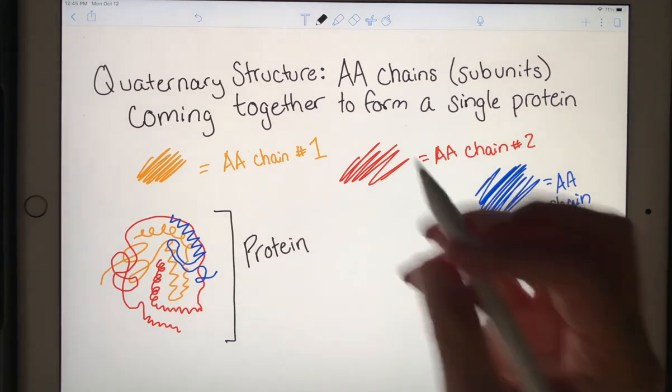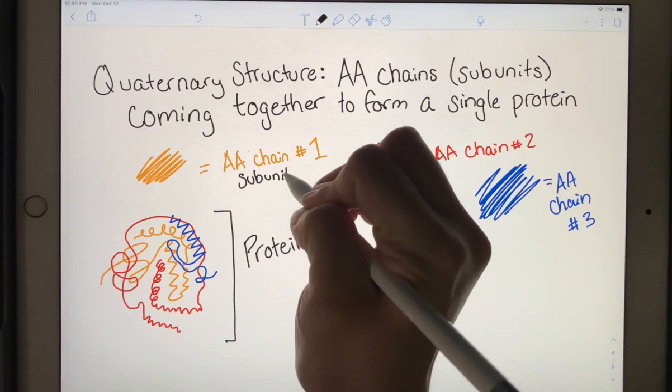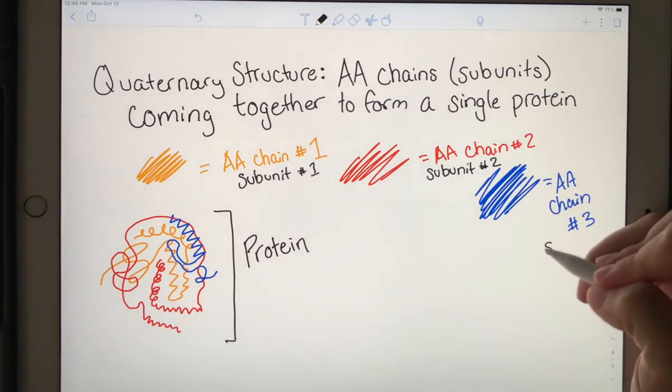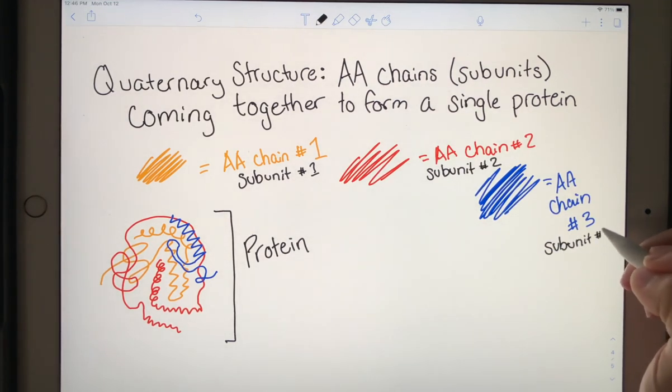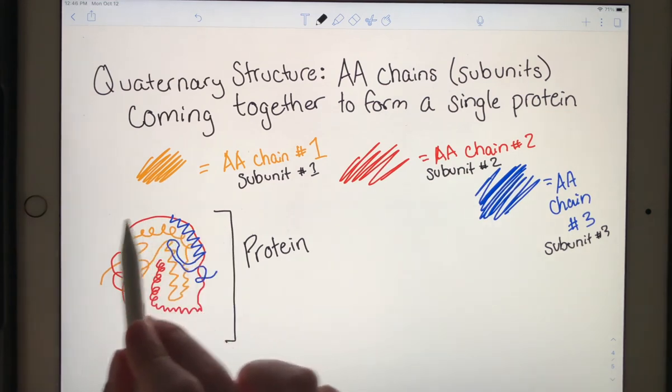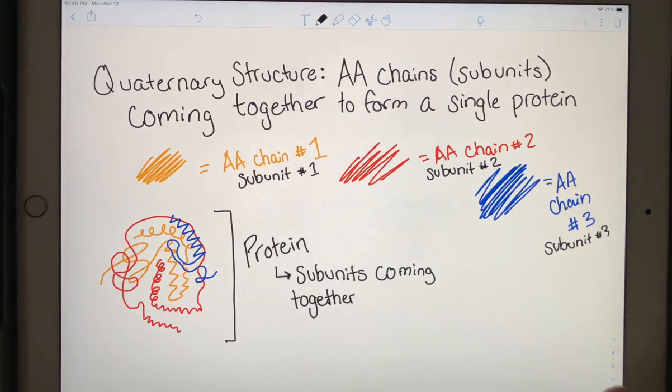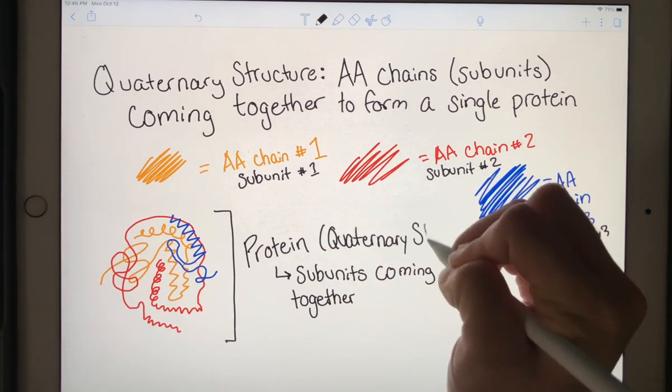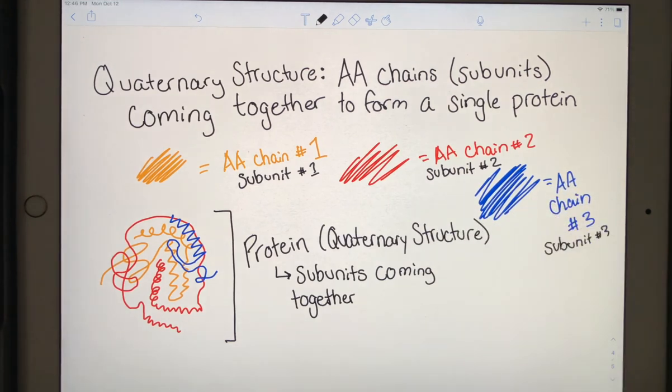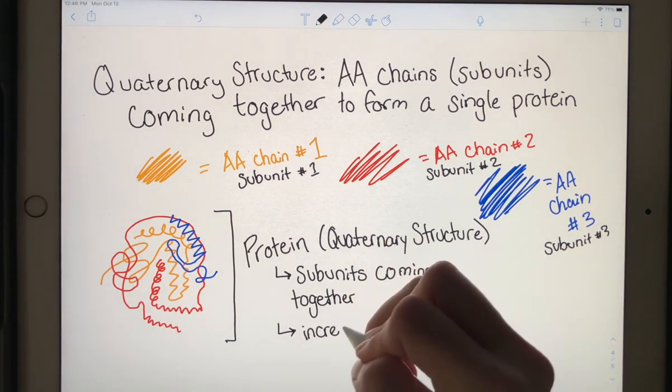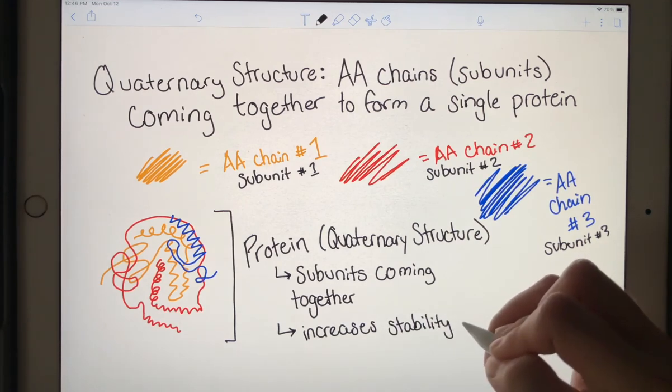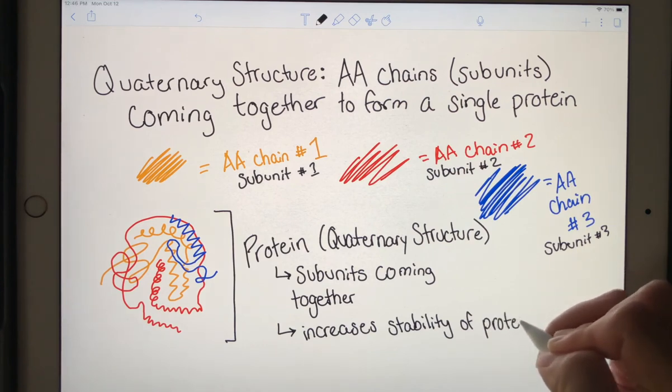And so we have subunit number one, subunit number two, and subunit number three. And together, these make one complete protein. And remember, this is for quaternary structure. And one of the reasons why quaternary structure is so important is because it increases the protein's stability.